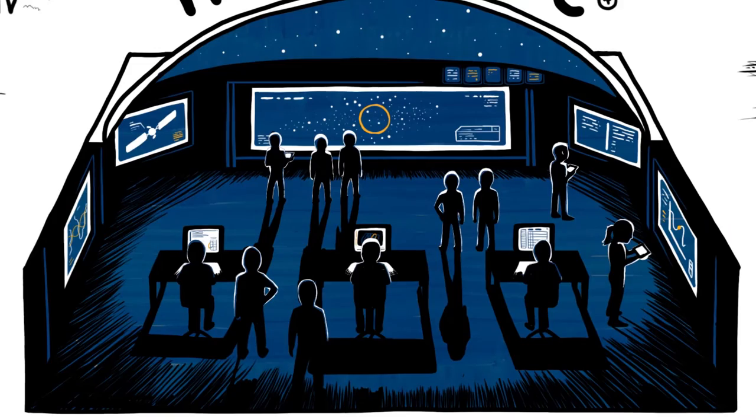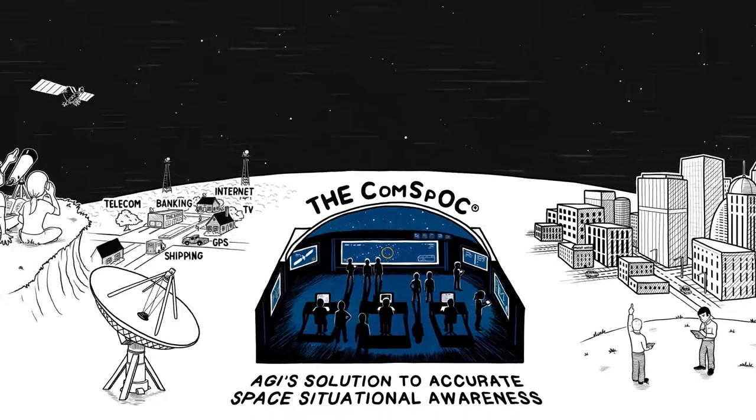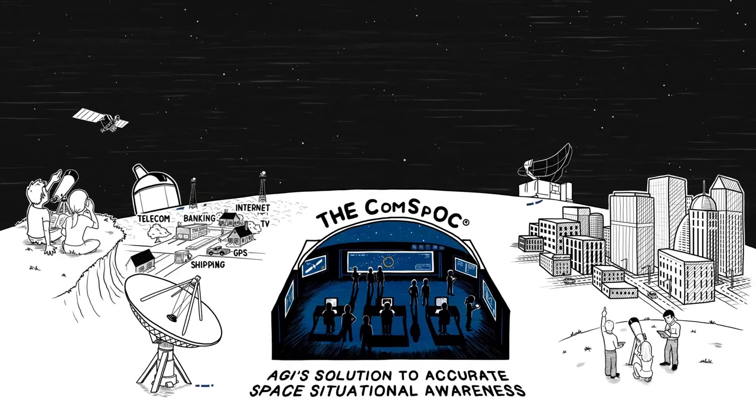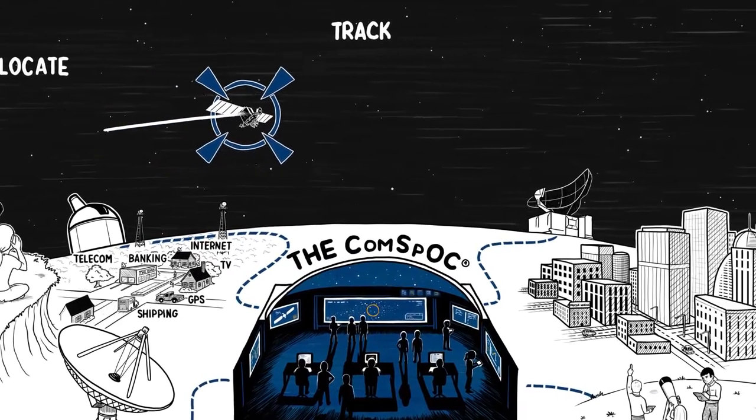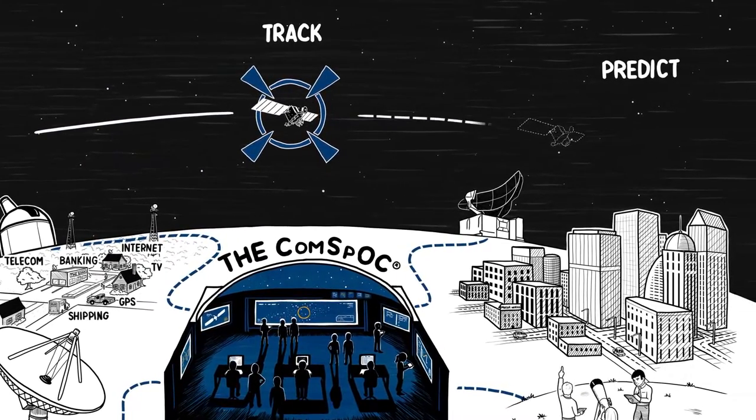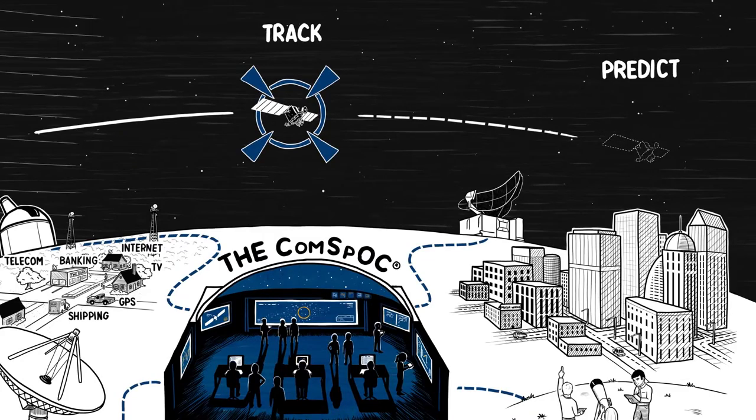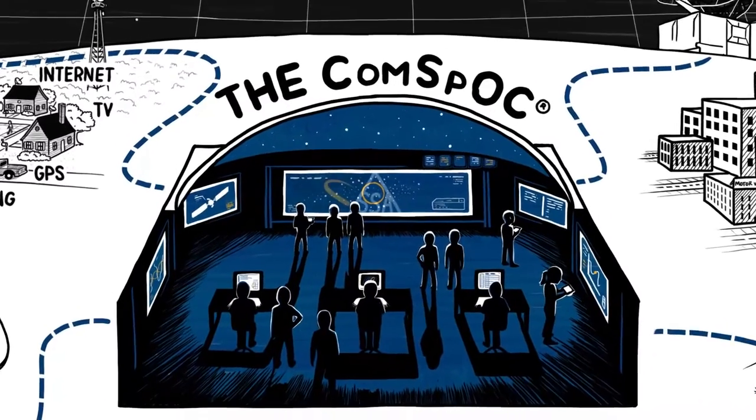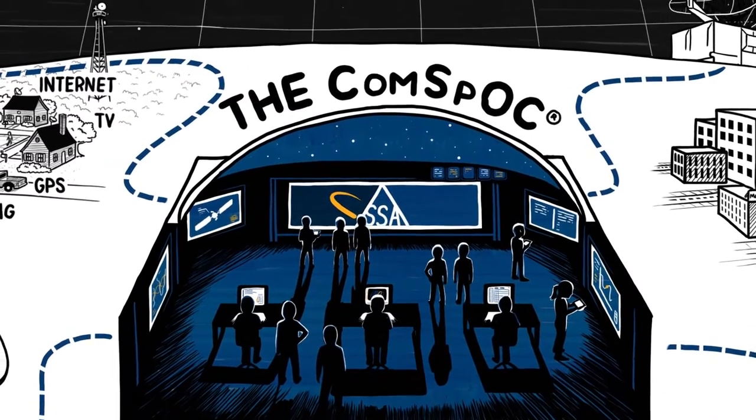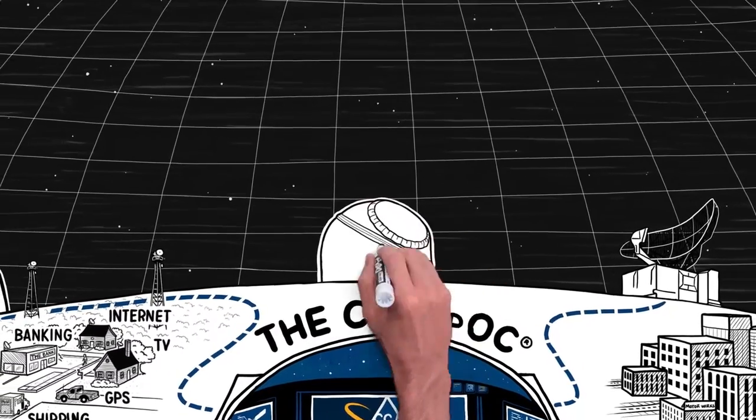At the COMSPOC, we employ a global and diverse network of commercial sensors and fuse these measurements together to locate, track, and predict the movements of space objects. Our incredible precision is feasible through the combination of AGI's SSA software suite and advancements in highly effective commercial sensing technologies.